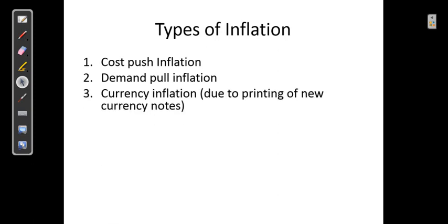The third type of inflation is known as currency inflation. It is called so because this inflation is induced by printing of more currency notes by the central bank. If the quantity of currency notes printed by the central bank increases at a given period of time, there would be more money supply in the economy, leading to an increase in the price level and leading to inflation.